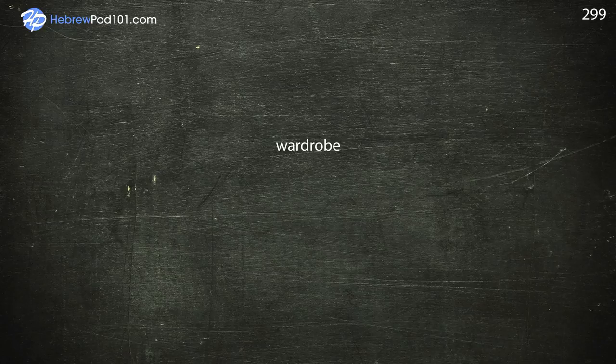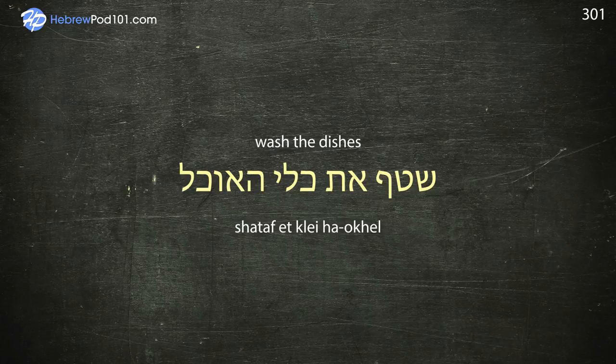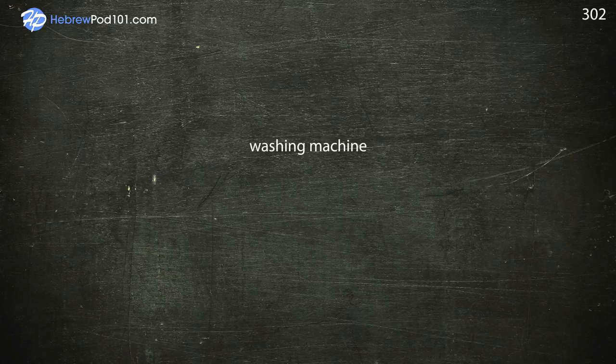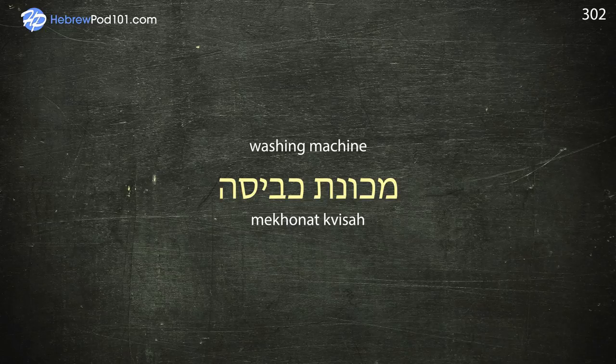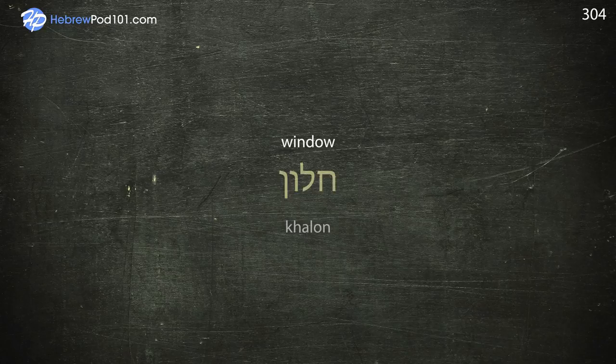Wardrobe. Wash — Shataf. Wash the dishes — Shataf Et Klei Ha-Okhel. Washing machine — Mekonat Kbisa. Water pipe — Cynor Mime. Window — Chalon. Wineglass — Koth Yain.